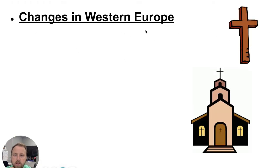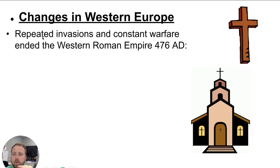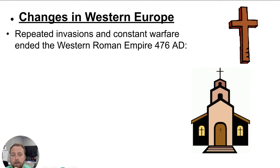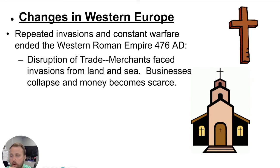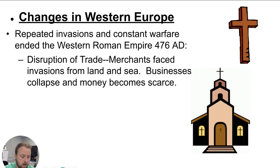What changed in Western Europe after the fall was repeated invasions and constant warfare. The Roman Empire was broken up into many small principalities and countries. This constant warfare disrupted trade — merchants faced invasion from land and sea, business collapsed, and money became scarce. The big idea here is disrupted trade: the structure of the Roman Empire had allowed trade to function, and its disruption made survival much harder.